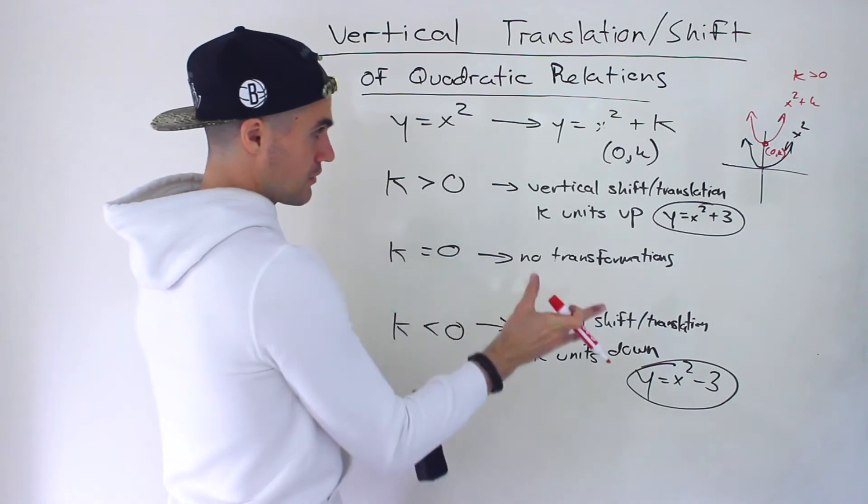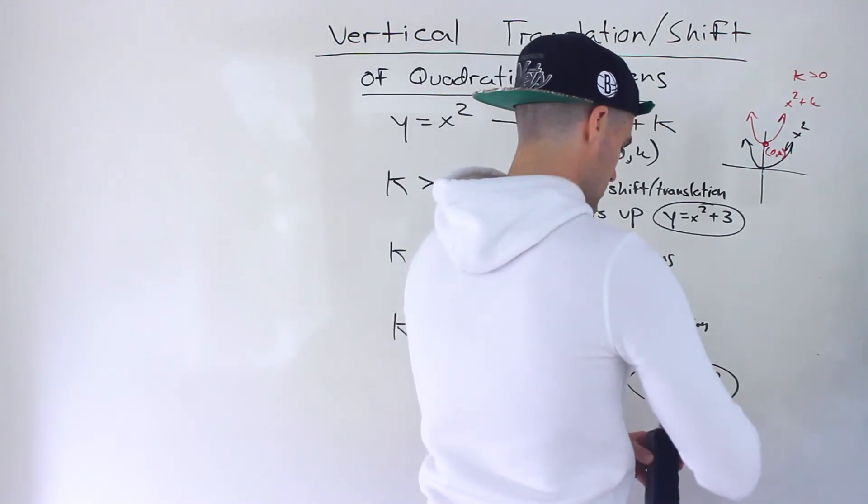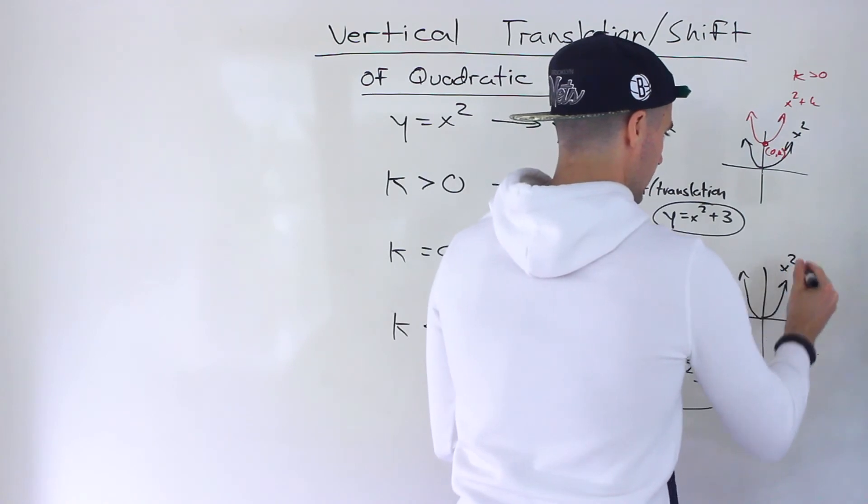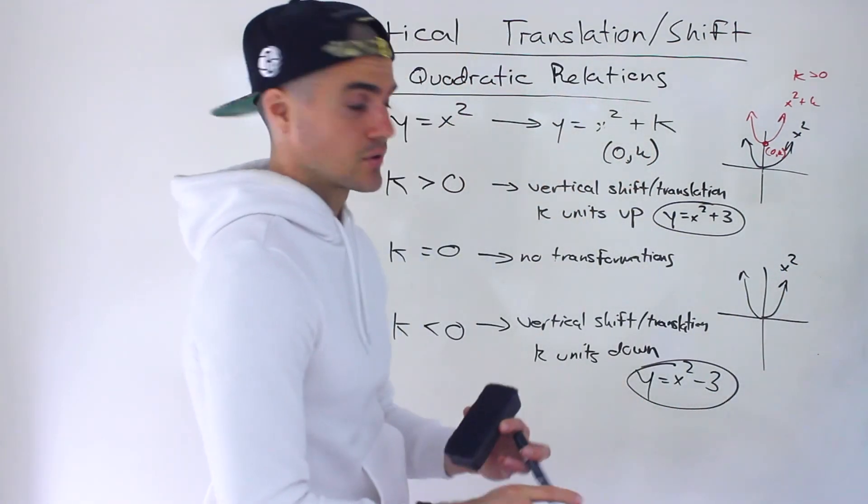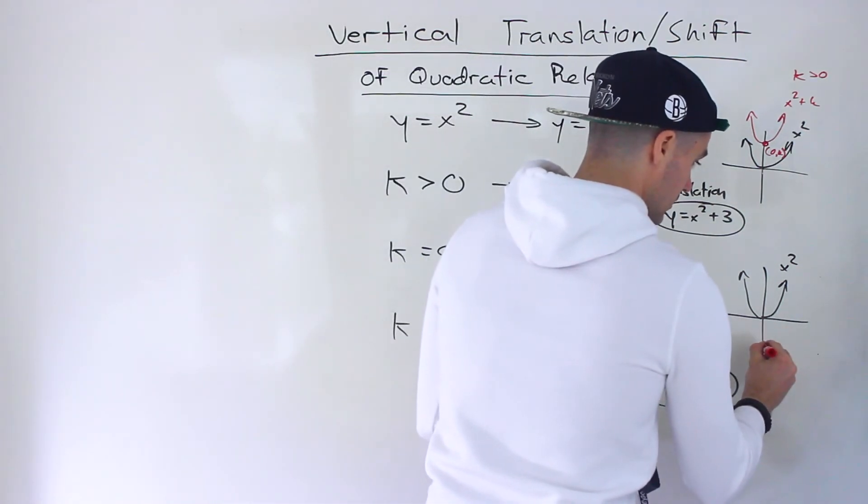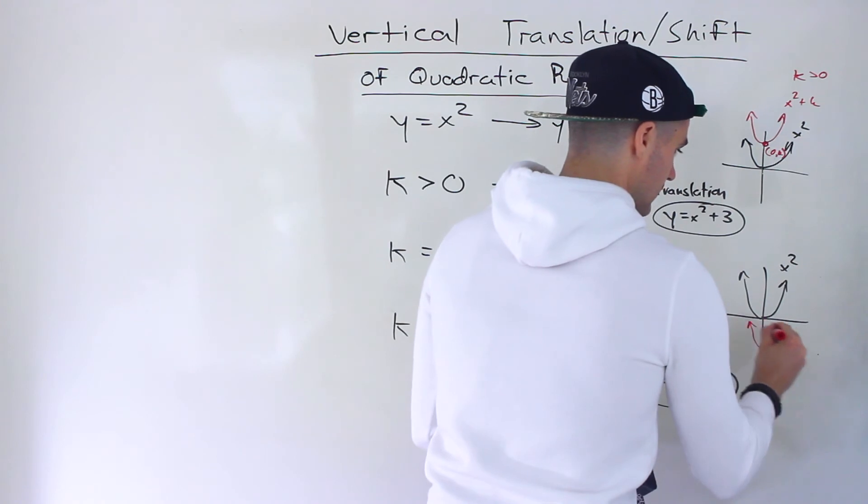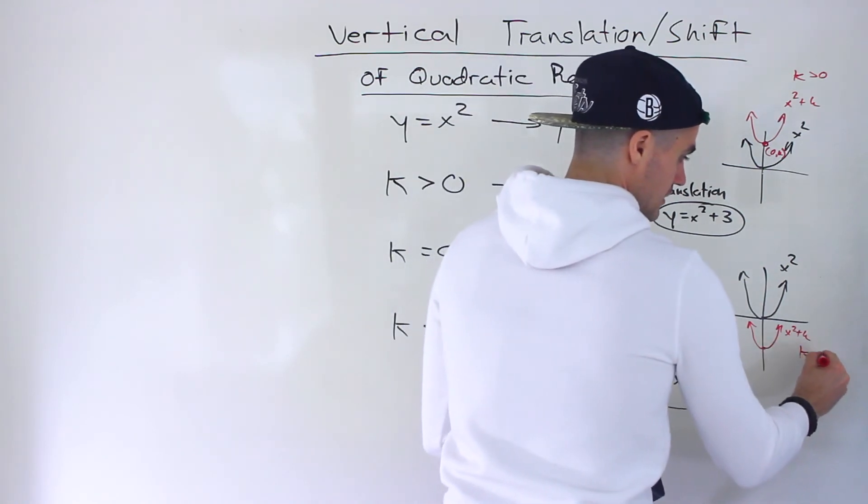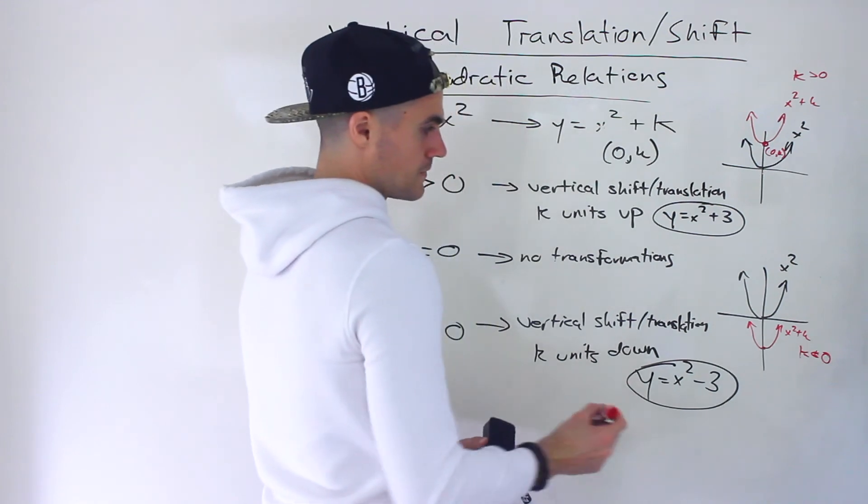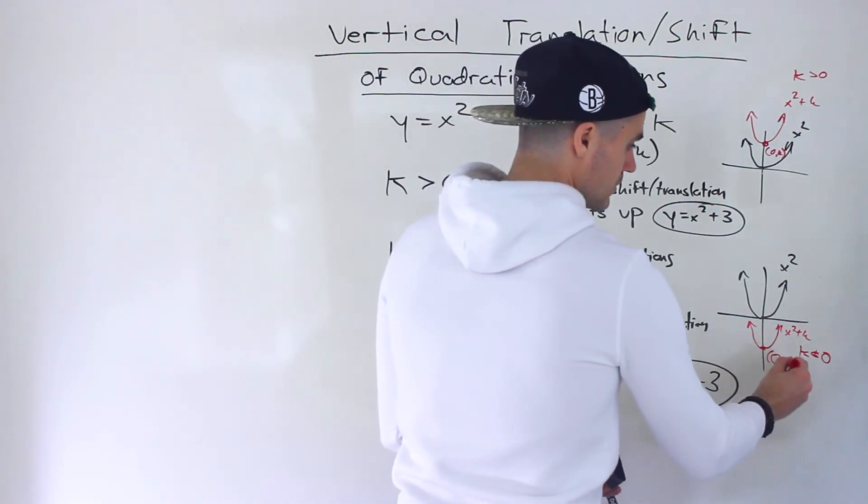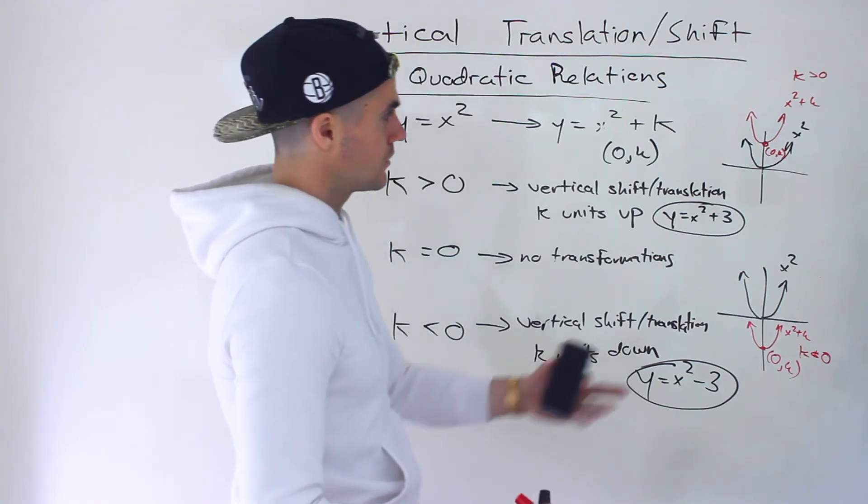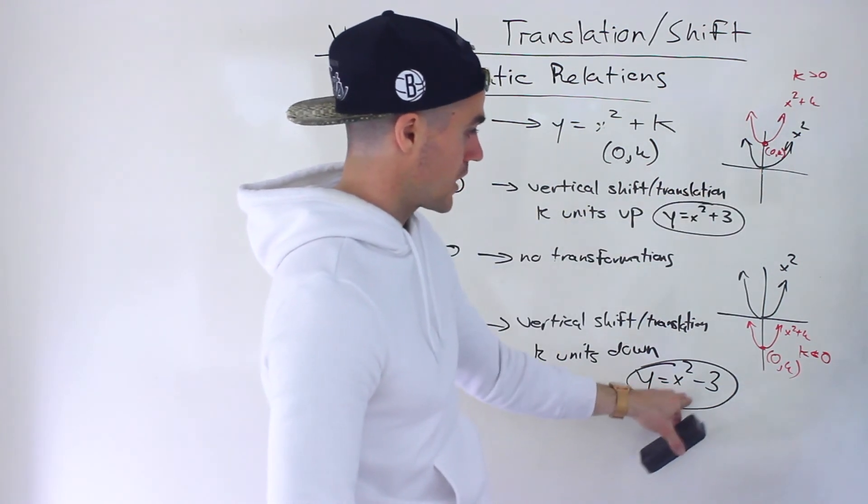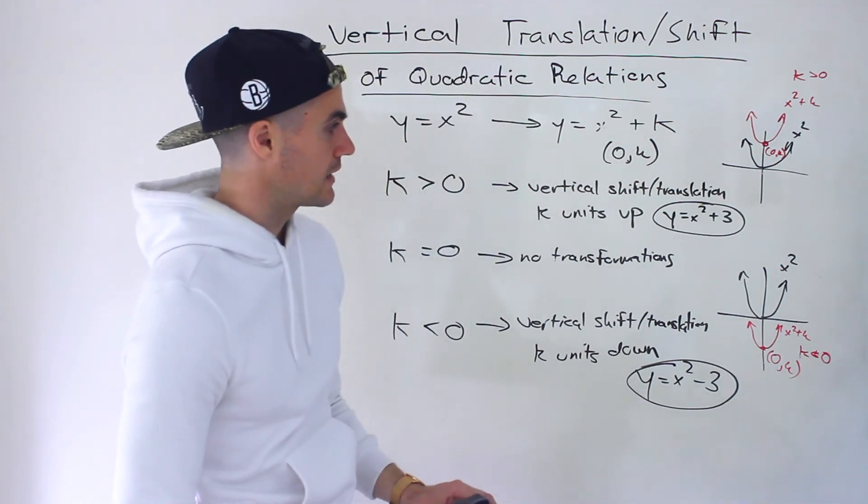For the k = 0 case, nothing happens, it's the same function. For the negative k case, if we have y = x², instead of shifting it up, we're shifting it down. This is y = x² + k when k is negative, when k < 0. The vertex is still at (0, k). For example, with y = x² + 3, the vertex is at (0, 3). With y = x² - 3, it's at (0, -3). It's always that k value.